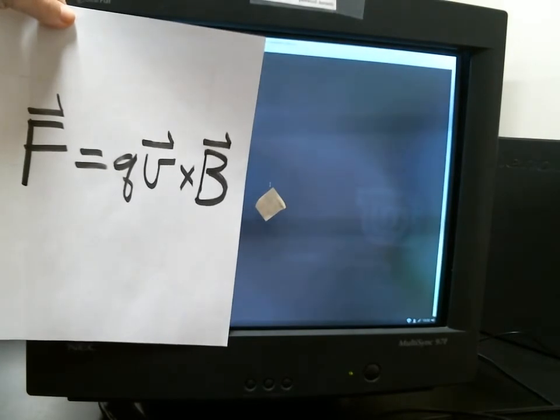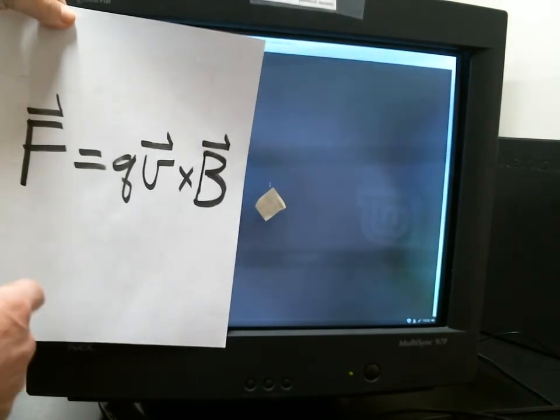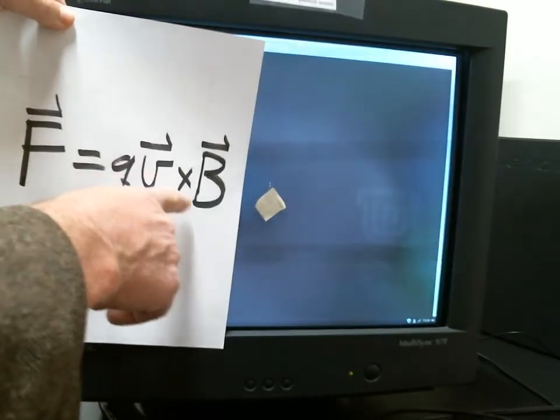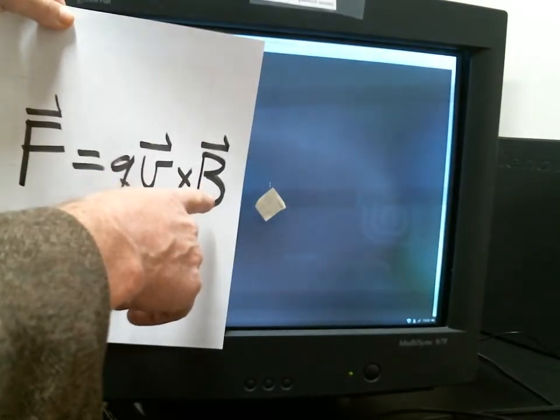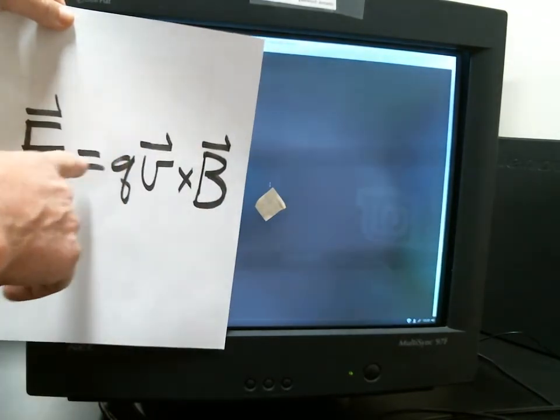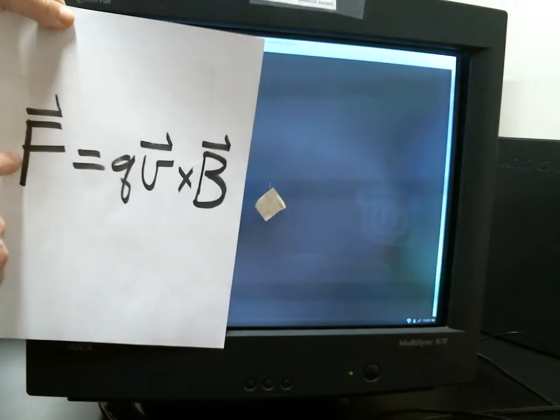The equation here is called the Lorentz force law. So if we've got a charge Q moving with a velocity vector V through a magnetic field B, then you can take the vector cross product, multiply it by the charge, and that gives you the force acting on that charge.